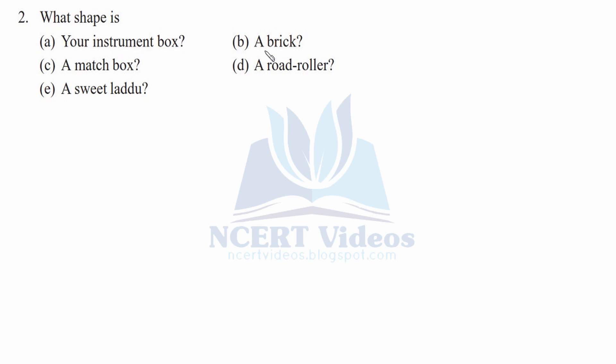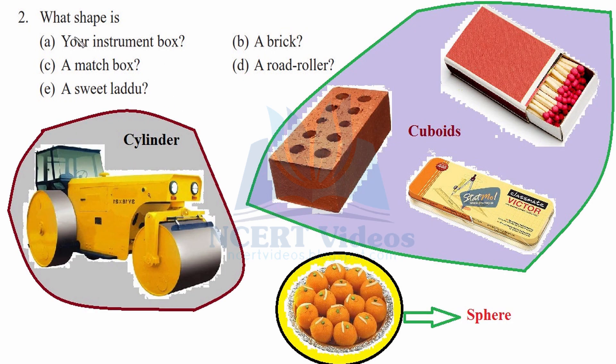You can see here this is a brick, this is a match box, and this is the geometric box. So all these three figures are cuboids - that is, they have different dimensions of length, breadth, and height, therefore they are cuboids.